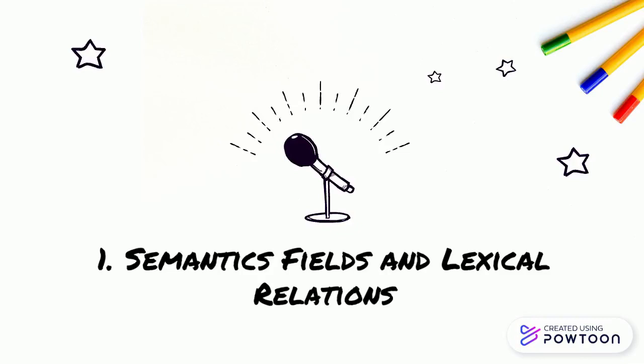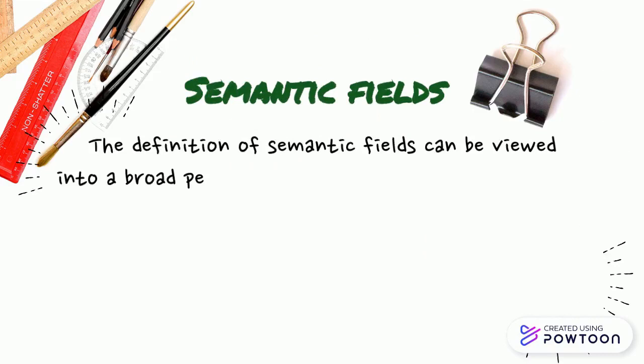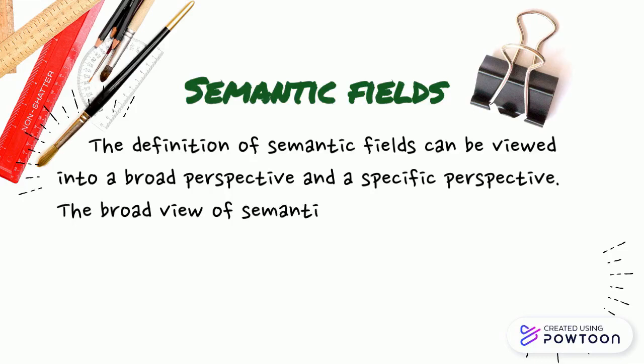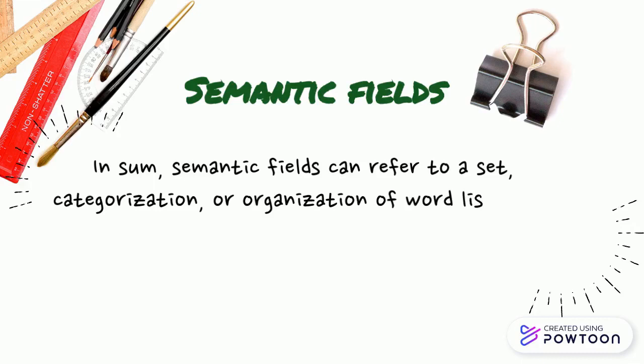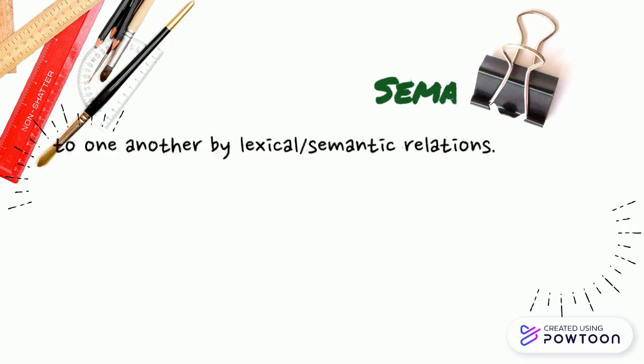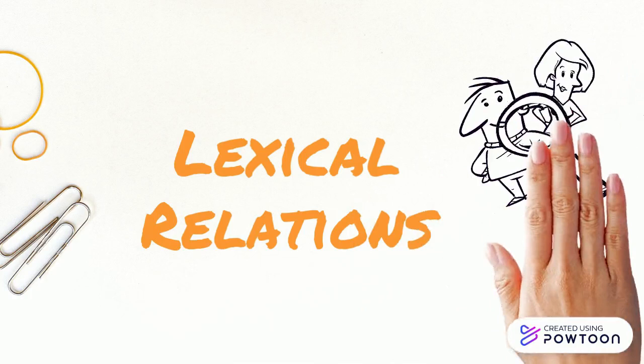Semantic Fields and Lexical Relations. The definition of semantic fields can be built into a broad perspective and a specific perspective. The broad view of semantic fields is defined by dictionaries. In sum, semantic fields can refer to a set, categorization, or organization of lists interrelated to one another by lexical or semantic relations. For example, a semantic field is 'flower' and its lexical relations are rose, sunflower, and jasmine.